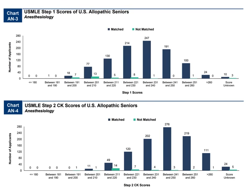These are the USMLE Step 1 and Step 2 score curves showing matched versus unmatched USMD seniors. The dark blue boxes represent those who matched. On average, people have the most success matching into anesthesiology when scoring between 231 and 240 on Step 1. Even some USMD seniors with scores of 191 to 200 — a really low Step 1 score — are still matching (18 students). This reinforces that anesthesiology is not what it used to be. That said, your goal should be a 230 or higher based on this data.